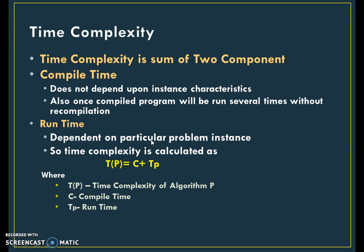Say P is an algorithm. Then the total time complexity is expressed as T(P) = C + Tp, where T(P) is the time complexity of program P, C is the compile time which is constant, and Tp is the runtime.